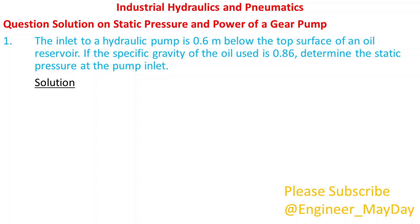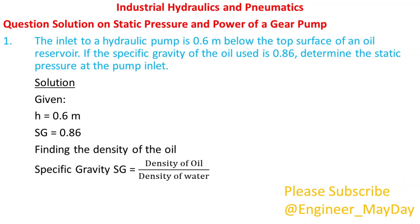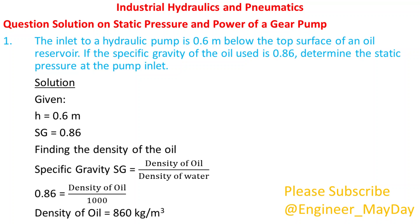Solution. Given: height h equals 0.6 meters, specific gravity SG equals 0.86. Finding the density of the oil: density of oil equals 860 kilograms per cubic meter.